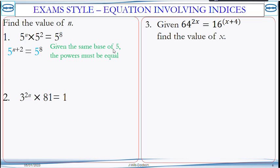Given that they have the same base of 5, we can add the powers. So we have 5 to the power of n plus 2 equals 5 to the 8. And because they have the same base, then the powers must be the same. So n plus 2 must be equal to 8. Then you solve for n. So n is equal to 6.